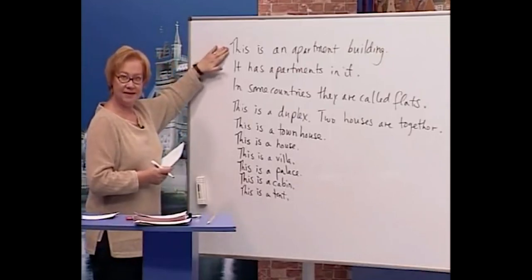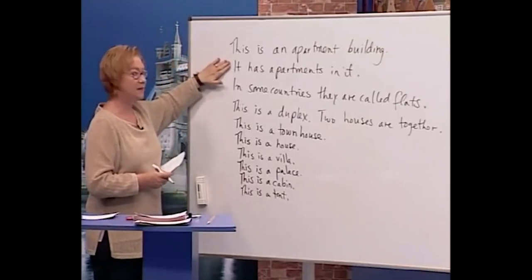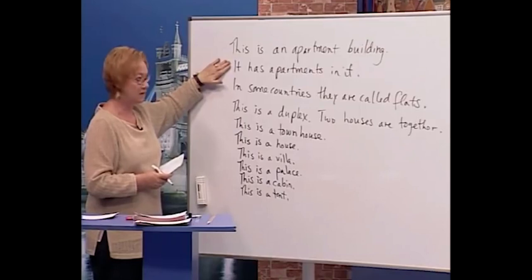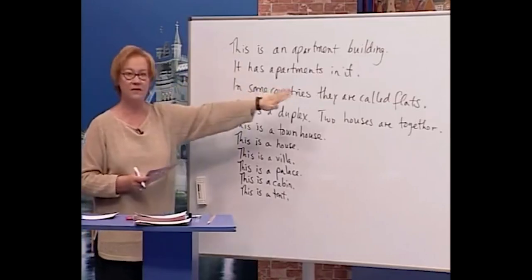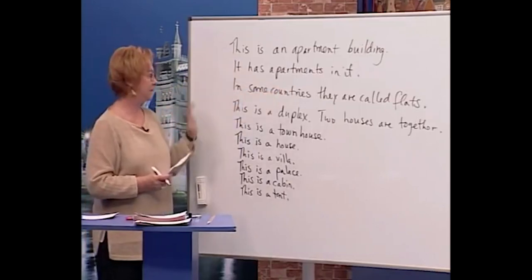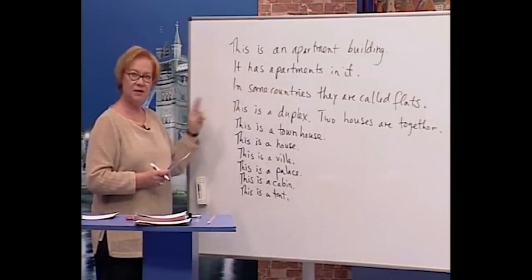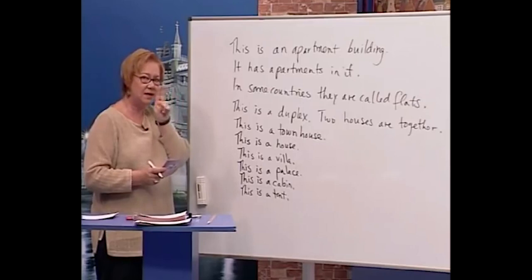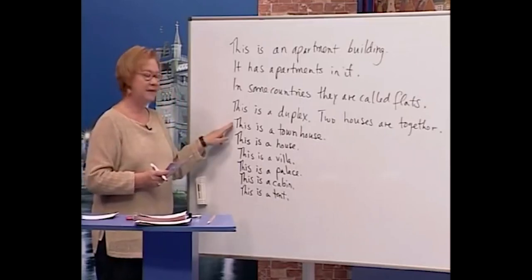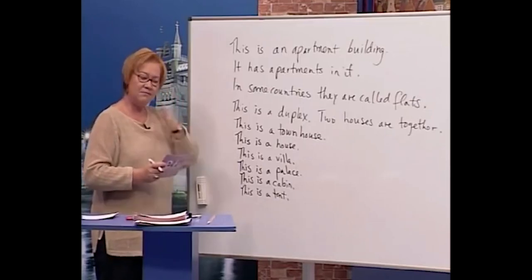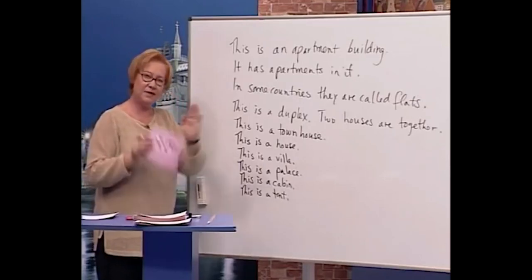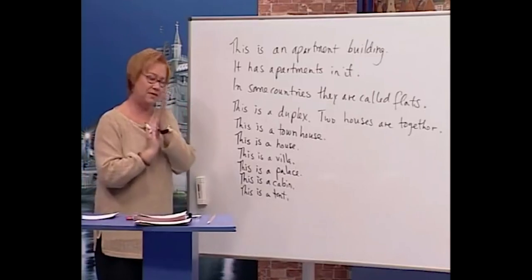This is an apartment building — it has apartments in it, or flats. This is a duplex — two houses are together. This is a townhouse — many houses are together.